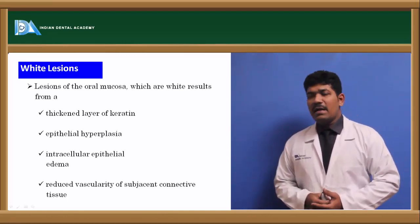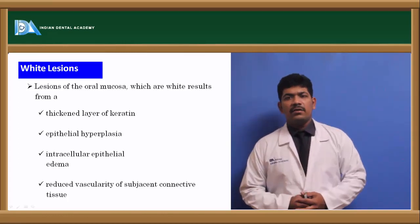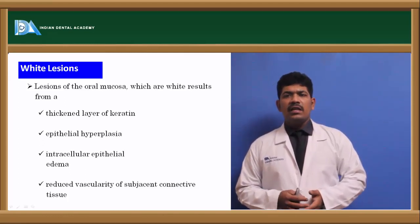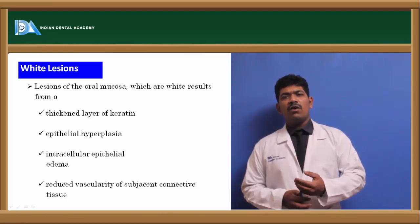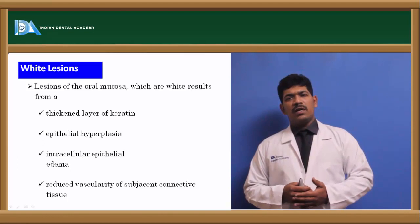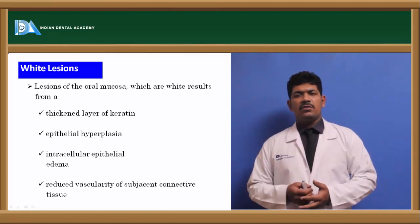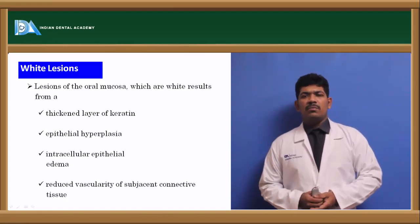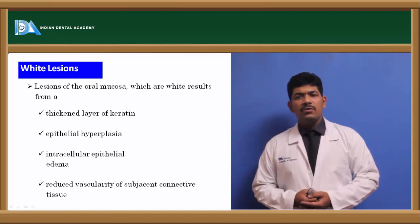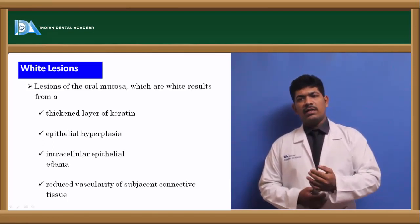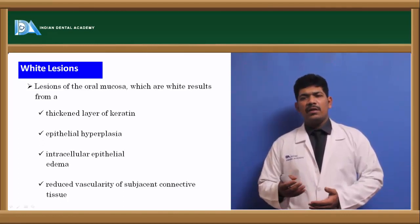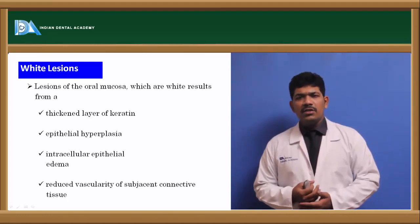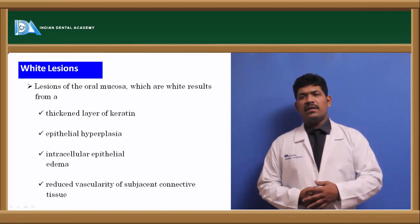Similarly, epithelial hyperplasia or intracellular epithelial edema — in the middle layers of the epithelium, that is the spinosomal layer, there could be an increase in the edema or intercellular edema, which gives rise to an increase in the size of the epithelium, thereby giving rise to the white appearance. Or it could also be because of reduced vascularity — reduced blood supplied to the top layers of the epithelium gives rise to a pale or whitish appearance of the lesion. These are the different reasons because of which a lesion can be classified as a white lesion.